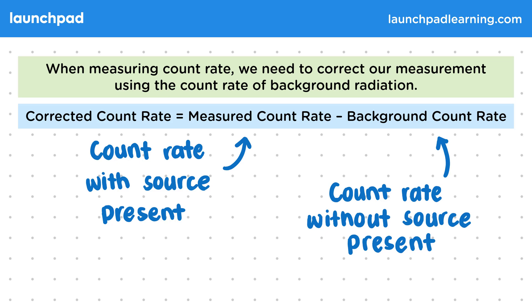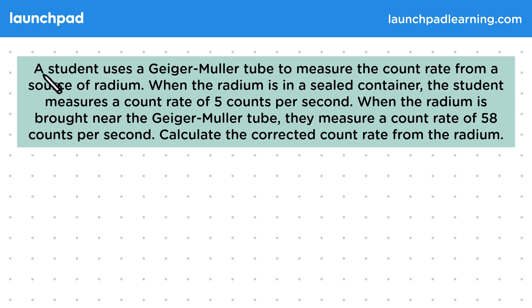Let's have a look at an example. A student uses a Geiger-Müller tube to measure the count rate from a source of radium.